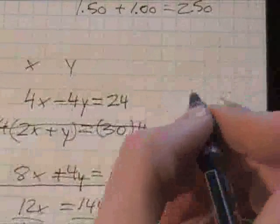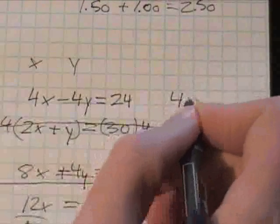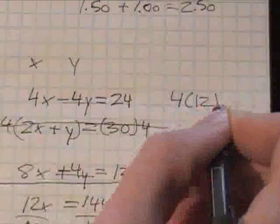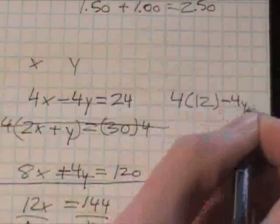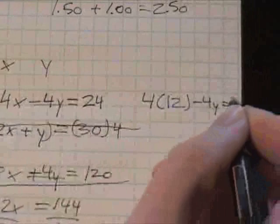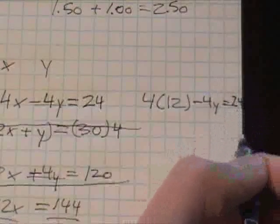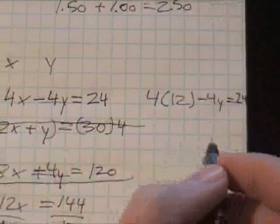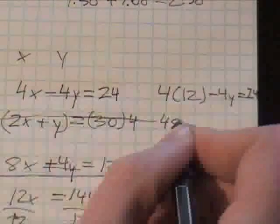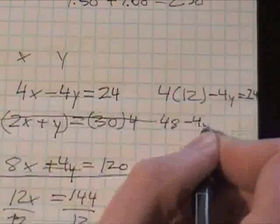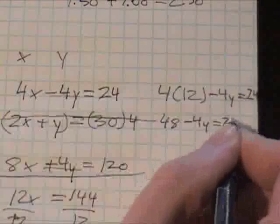Let's write it over here because we're kind of running out of space. Four times 12 minus 4y equals 24. Barely get it in there. Okay, I'm gonna have to write a little bit smaller. So 48 minus 4y equals 24.